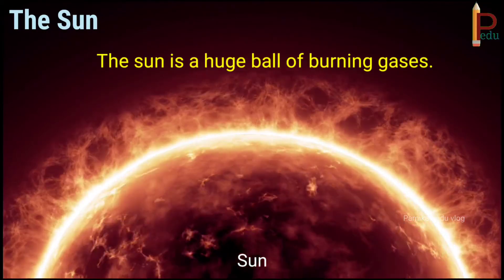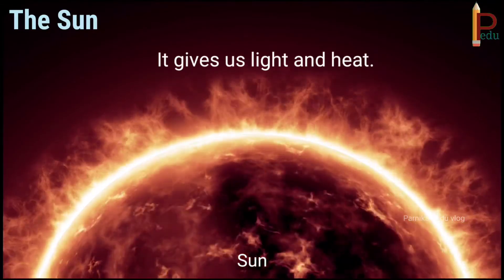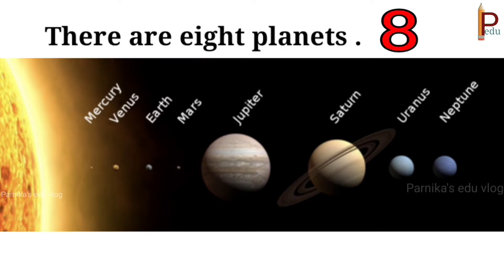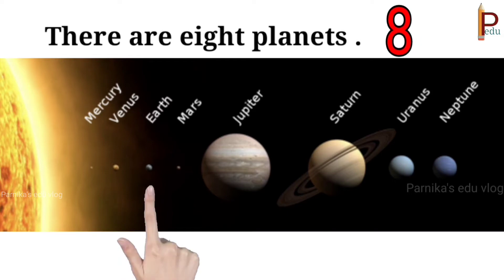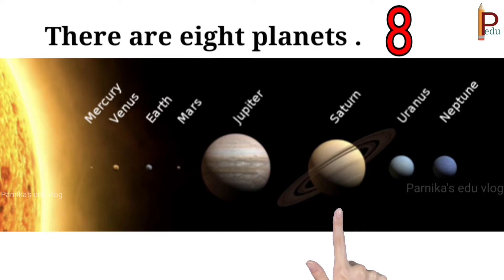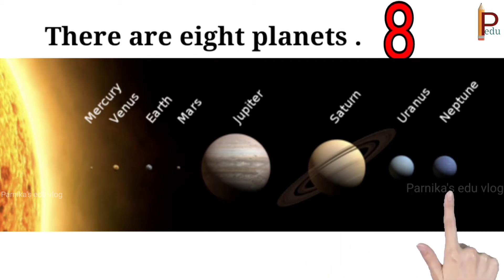The sun is a huge ball of burning gases. It gives us light and heat. There are eight planets in the solar system. They are Mercury, Venus, Earth, Mars, Jupiter, Saturn, Uranus and Neptune.